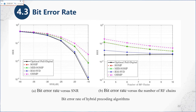We compare the bit error rate of the algorithms, consistent with the spectral efficiency results. MIBSOMP and SOMP have the same bit error rate. The RMSVD algorithm has a lower bit error rate than the SOMP algorithm. The OBMP algorithm has the highest bit error rate.